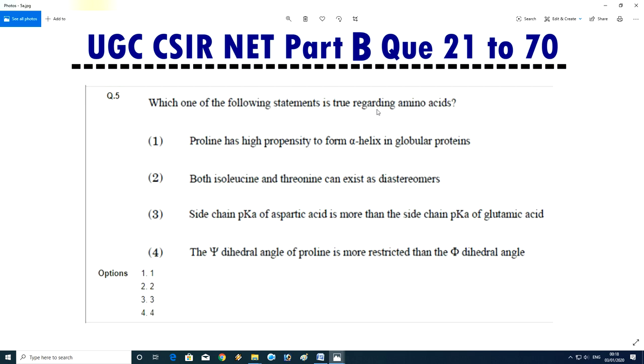Question No.5 - Which of the following statement is true regarding amino acid? Proline has high propensity to form alpha-helix in globular protein. Both isoleucine and threonine can exist as diastereomers. Side chain pK of aspartic acid is more than the side chain pK of glutamic acid. The psi dihedral angle of proline is more restricted than the phi dihedral angle. Answer is B.